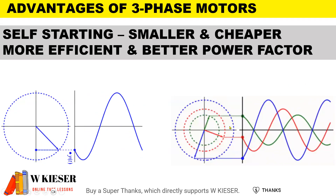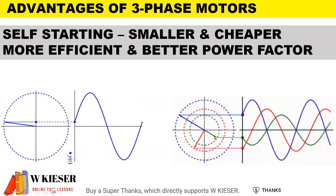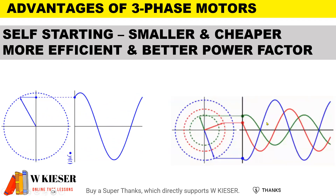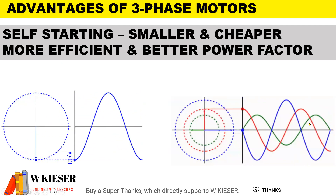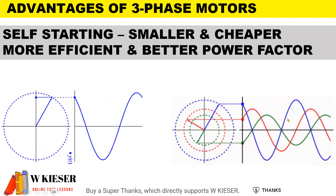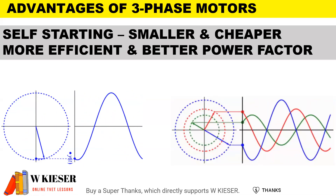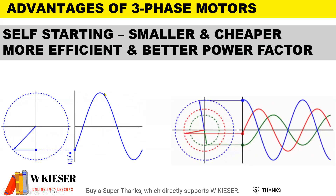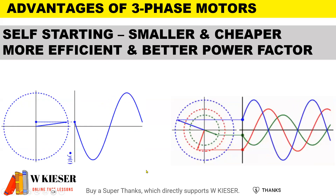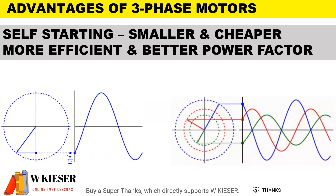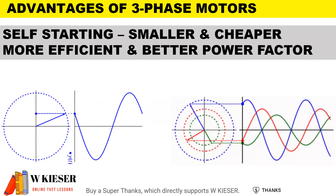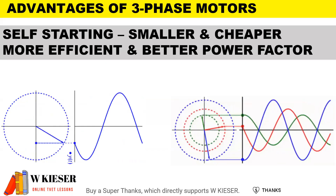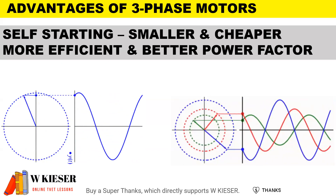A three-phase motor has three coils placed 120 degrees apart. As they rotate 360 degrees, they produce three sine waves. Because of the phase difference between the sine waves, three-phase motors are self-starting. However, a single-phase motor only produces one sine wave, and the problem is that single-phase motors are not self-starting. Three-phase motors are also smaller, cheaper, more efficient, and have a better power factor.